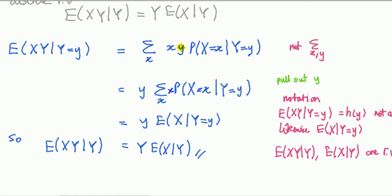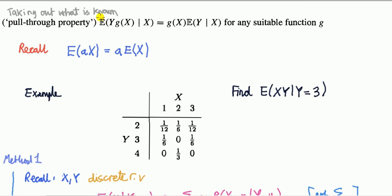A common mistake: we are summing over X only, not over both X and Y, because we are given a particular value of Y. If you mistakenly replace the conditional probability with the joint probability of X and Y and sum over both, you get E[XY] — the unconditional expectation — not the conditional one. The same steps apply to the general case with G(X) in place of X; we just need G to be a suitable function for the discrete setting.